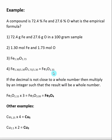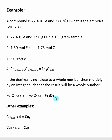You don't want to round 1.33 to 1 — it is too far away. When this happens, multiply by an integer such that the result will be a whole number. Here, multiplying 1.33 by 3 gives 3.99 oxygens, which is close enough to round to 4. So for every 3 irons, we have 4 oxygens, and the empirical formula is Fe3O4.